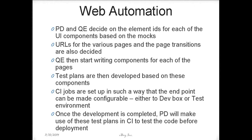Once the mocks are ready for the UI, we convert each and every UI component and assign them with IDs. These IDs will be used to identify the UI components for testing. We put everything in a property file and also decide on the page URLs and the transitions for each and every page — like what button click goes to the next page and which page it goes to.